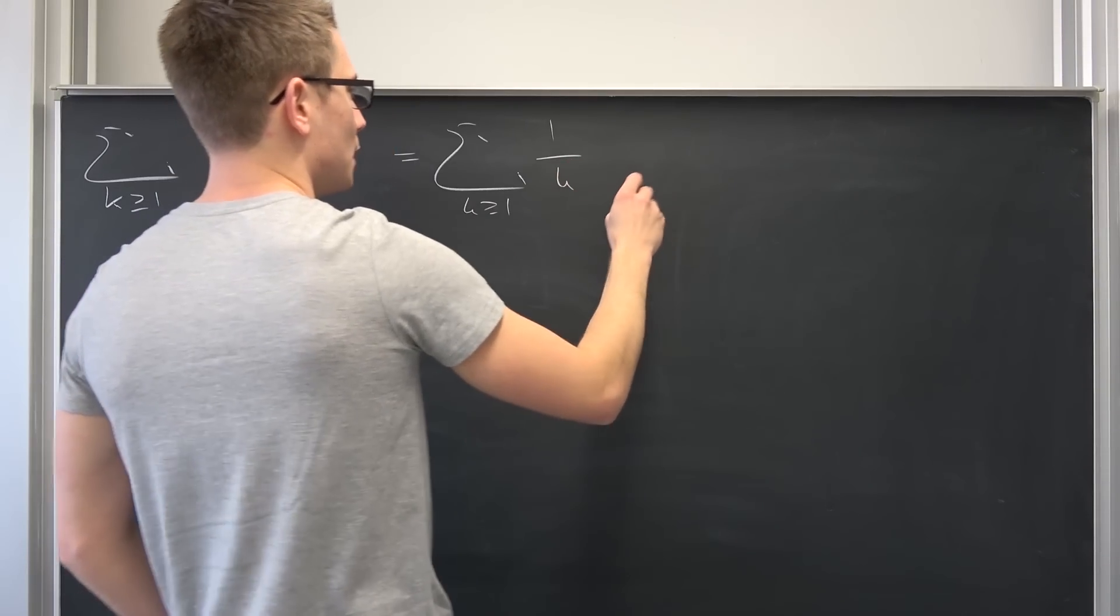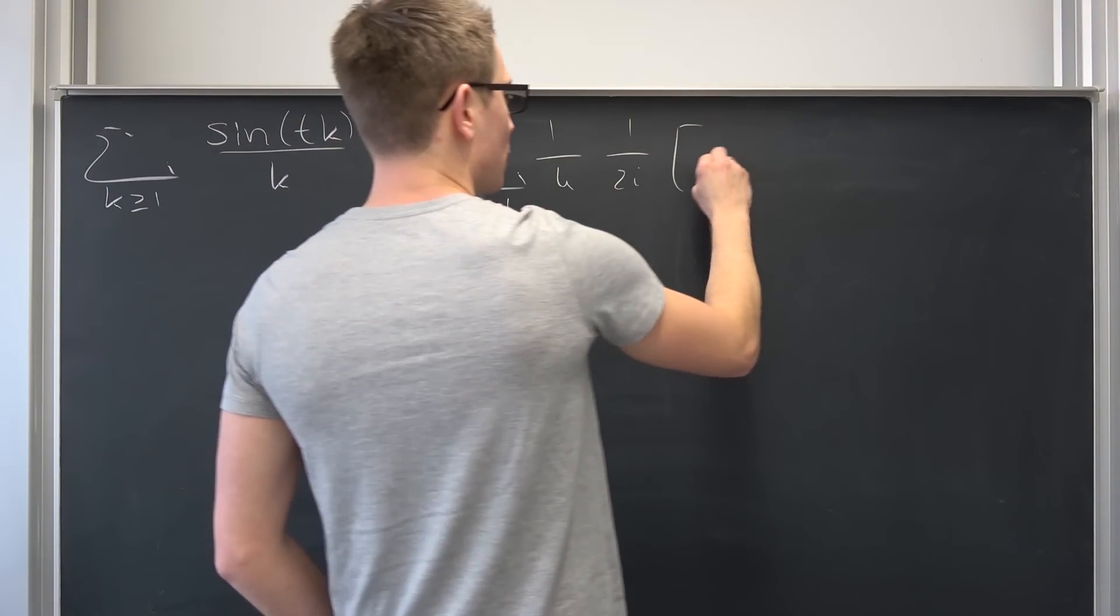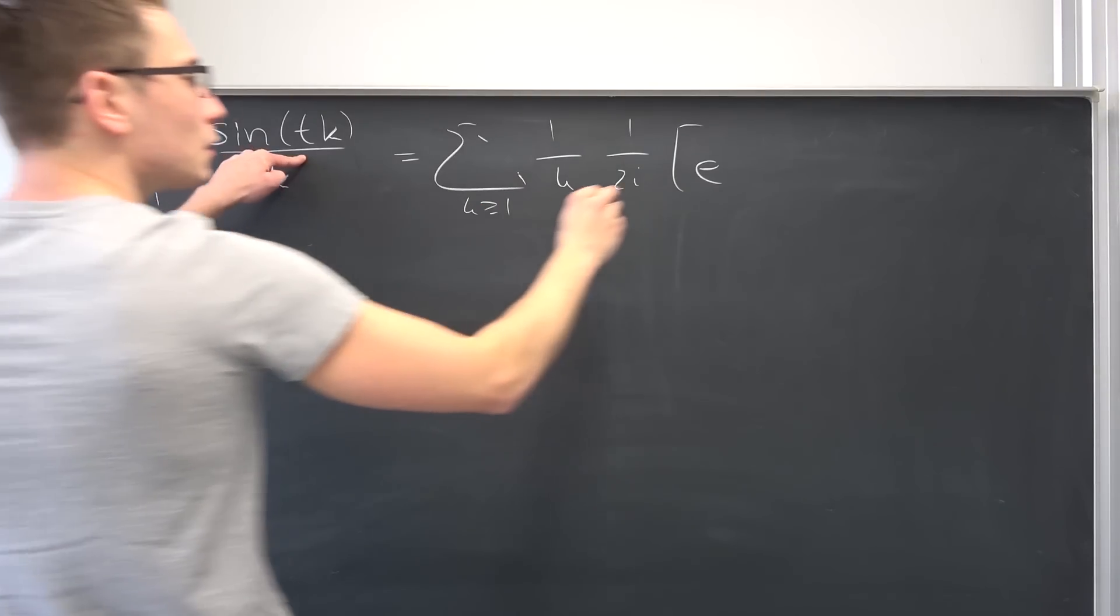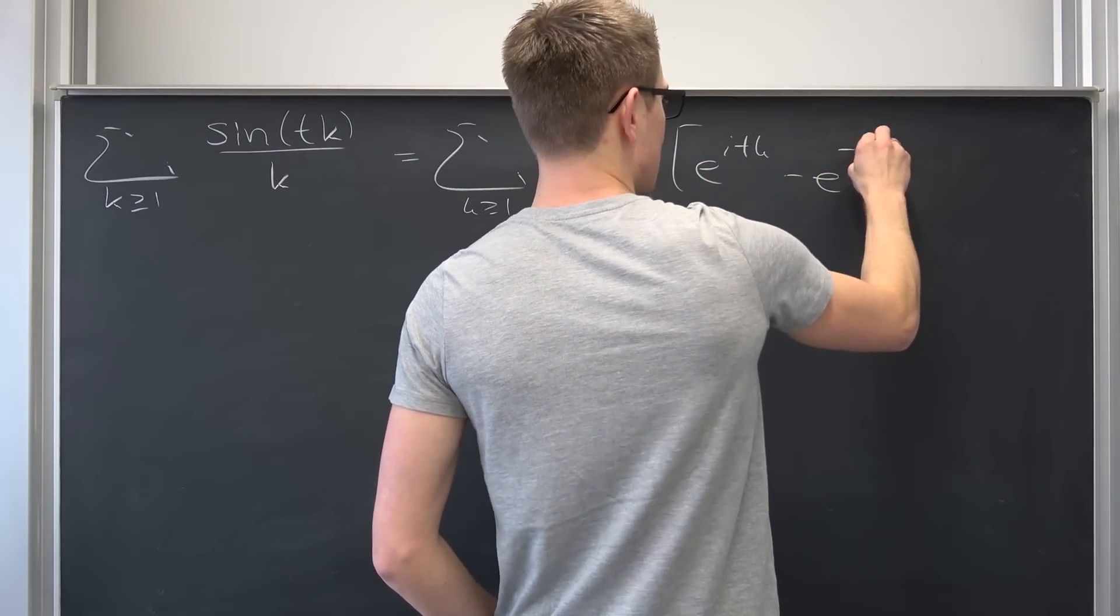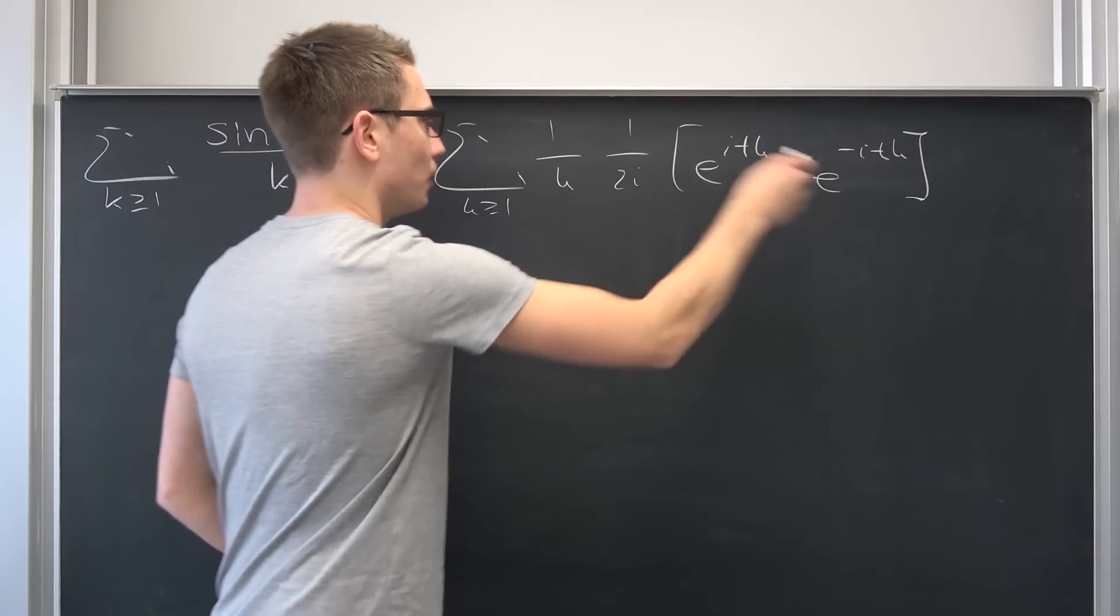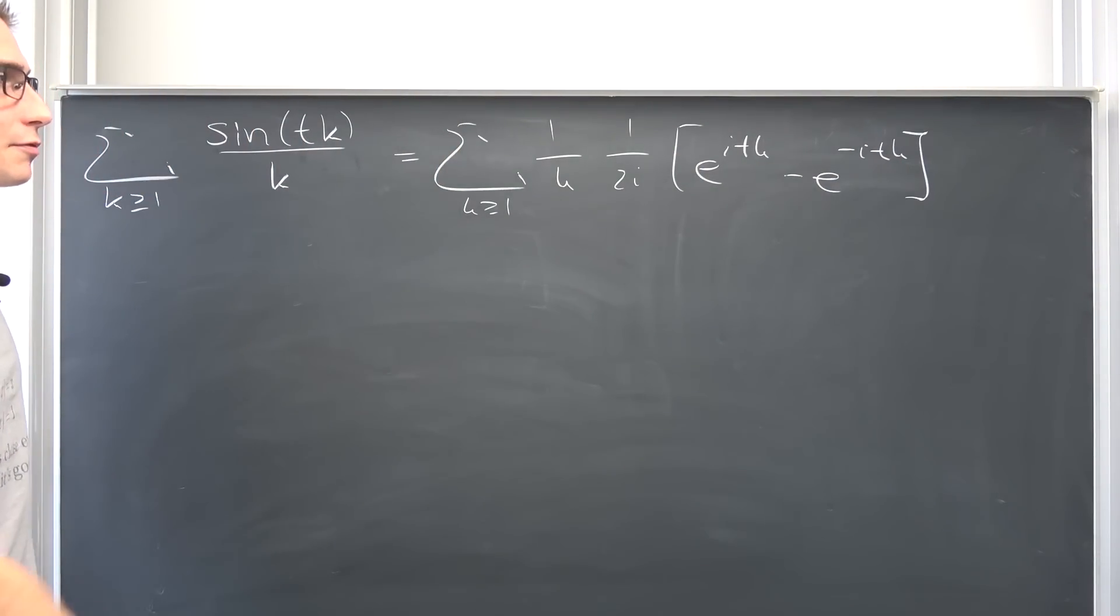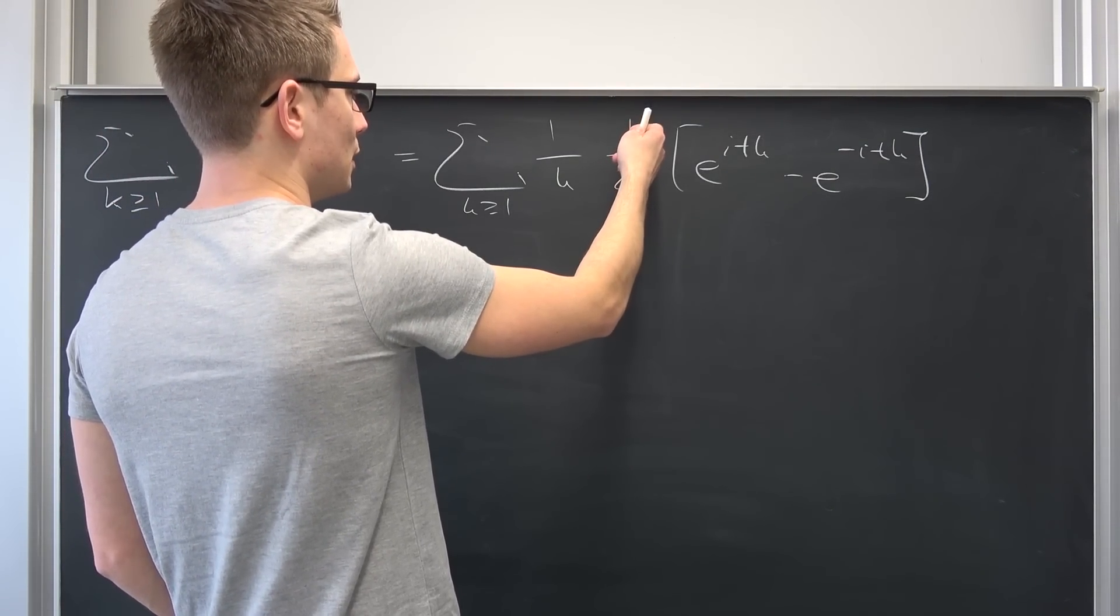This 1 over k times, we have 1 over 2i and also we are going to have e to the itk minus e to the negative itk. This is just the Euler definition. So this whole part of our sine wave. Now 1 over 2i, let me rewrite this a little bit.